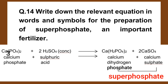Number 14. Write down the relevant equation in words and symbols for the preparation of superphosphate, an important fertilizer. Ca3(PO4)2 plus H2SO4 gives Ca(H2PO4)2 (superphosphate) plus CaSO4. This is how superphosphate is produced.